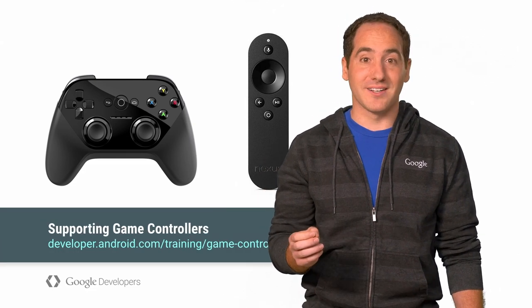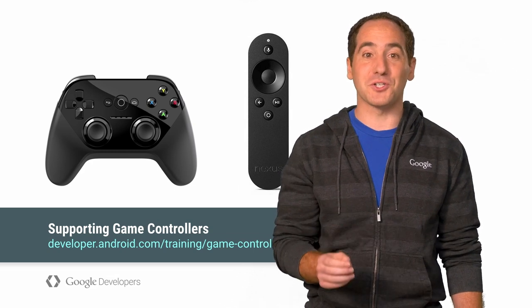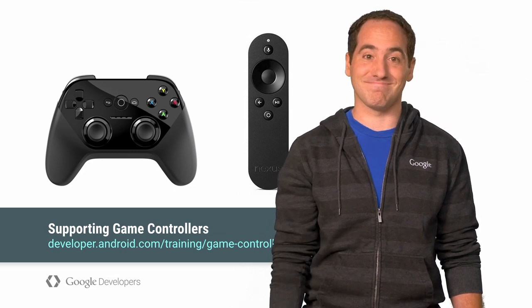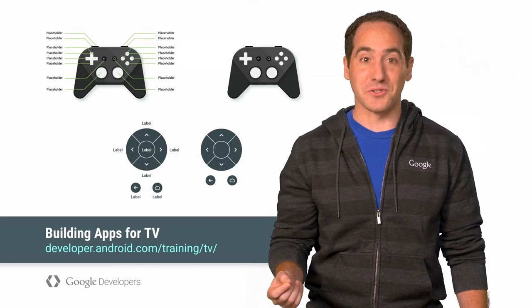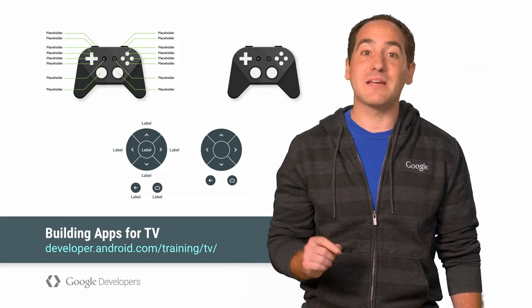Now let's talk about how to control your game. Instead of a touchscreen, on the TV players control your game using a D-pad remote control or more advanced gamepad. Most TVs ship with just the remote, so if your game supports a simple input scheme, you can potentially reach every Android TV user. Always show visual controller instructions in your game for both types of controllers if you support them. Google provides generic graphics you can use for this purpose, and drawing your own is fine too — just keep them free from branding.